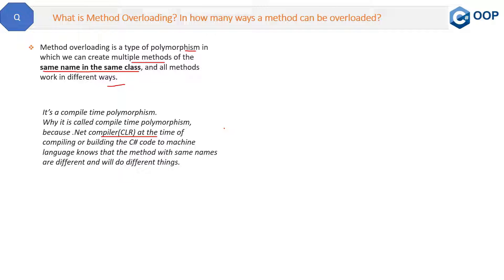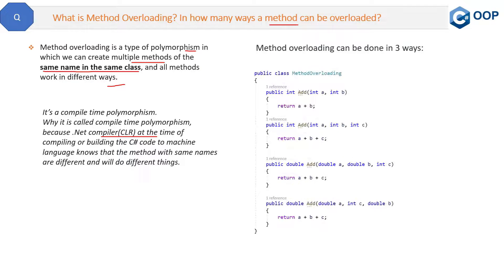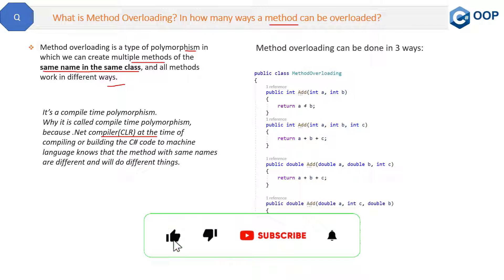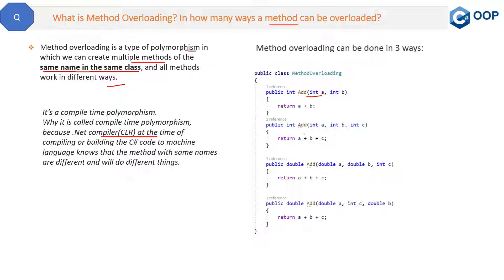Now the second part of the question is: in how many ways can a method be overloaded? Let's understand this with a code example. Method overloading can be done in three ways. Here is the code — we have four methods with the same name, and the name is 'add'.